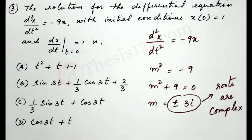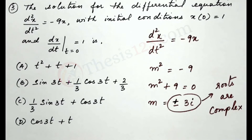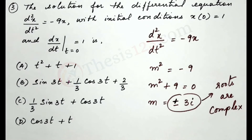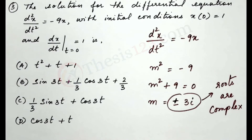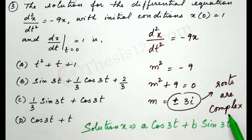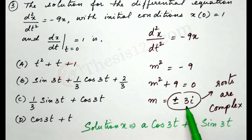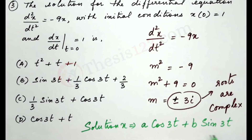When the roots are complex, we use trigonometric functions for the general solution. Since the roots are complex, the solution x is written as x = a·cos(3t) + b·sin(3t), because we have 3 here from the roots ±3i.